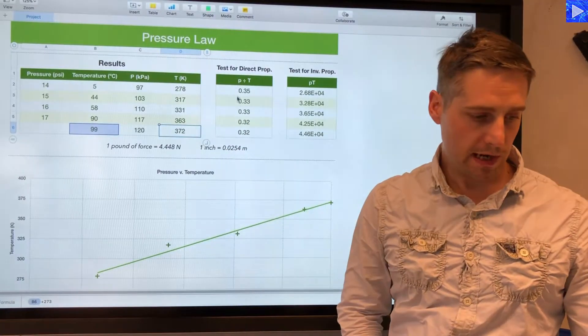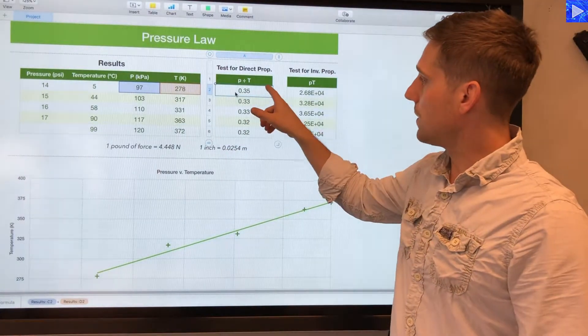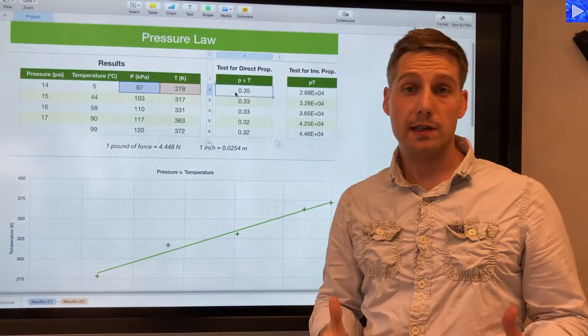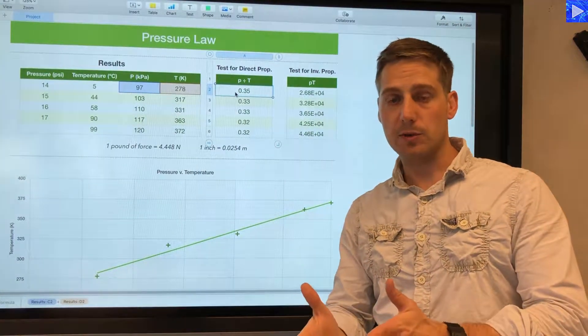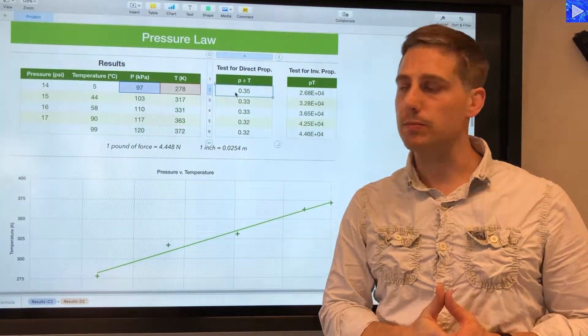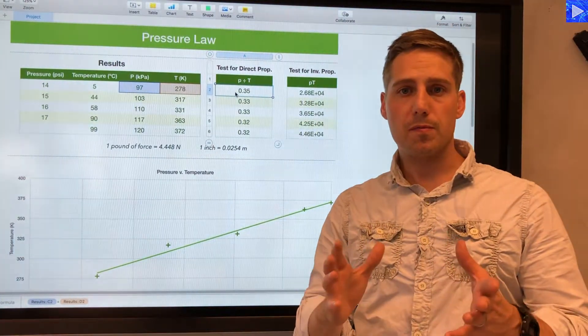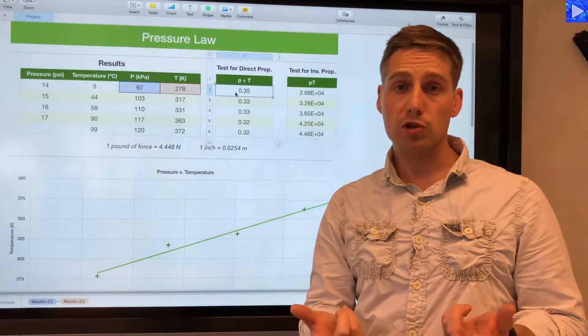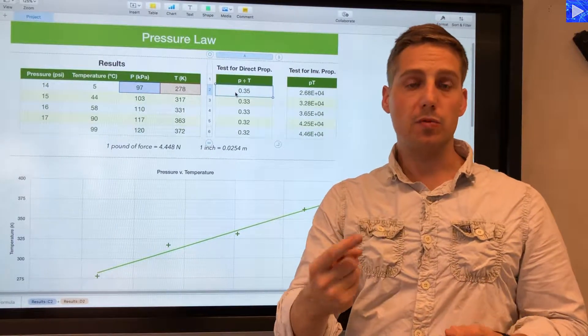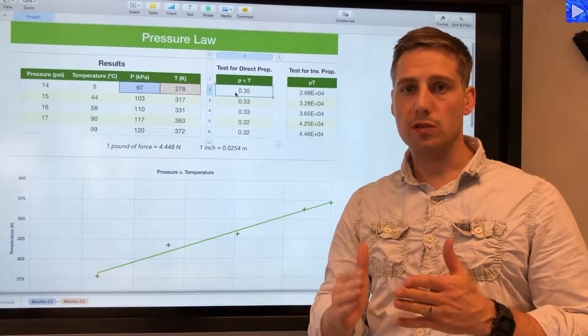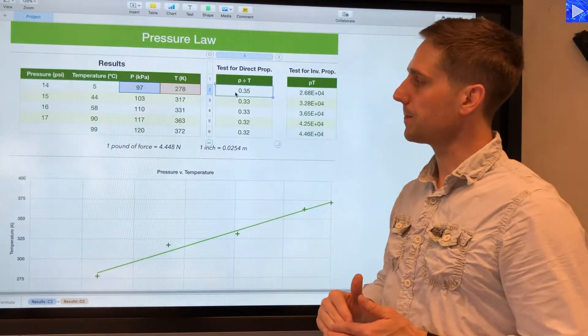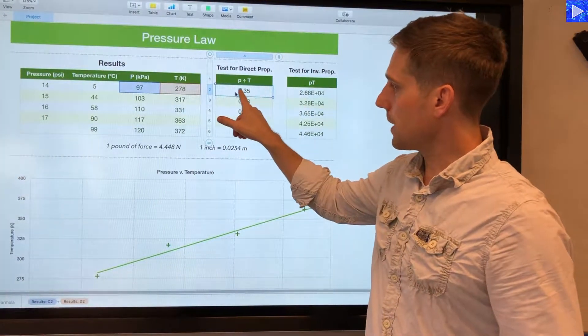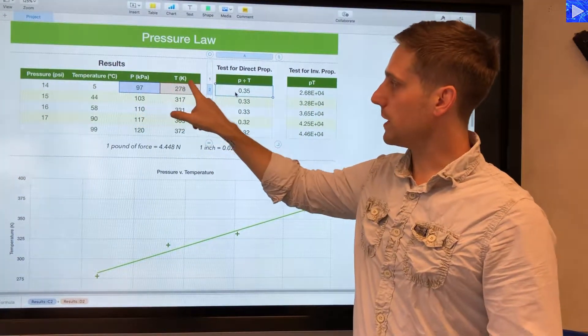Okay, so now on to this table here. So this is my test for whether the data is directly proportional, i.e., is the gas pressure directly proportional to the temperature? If you have variables that are directly proportional, then one variable divided by the other should give you a constant value for each set of data.